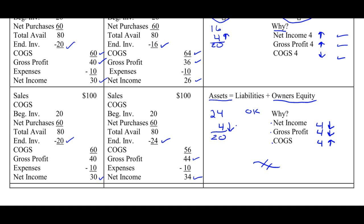Gross profit? Also true — overstated by $4, needs to come down. Cost of goods sold: I have it at $56, and I'm saying that it should have been higher at $60.